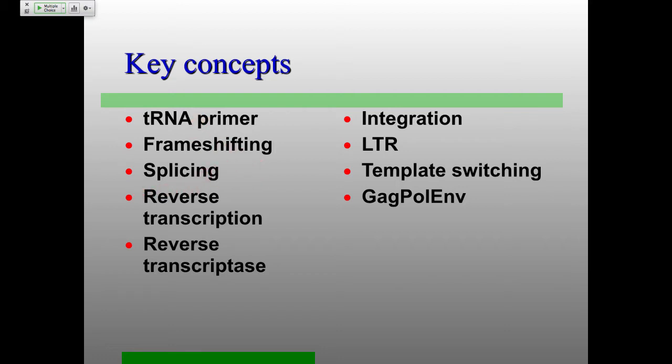There's splicing that happens here, which is very different from the pox viruses we were talking about last time — those don't have any splicing. Here, splicing is taking place, which should give you an indication that these guys are replicating in the nucleus using all cellular splicing machinery. What's very virus-specific is the reverse transcription — going from RNA to DNA — performed by the reverse transcriptase enzyme.